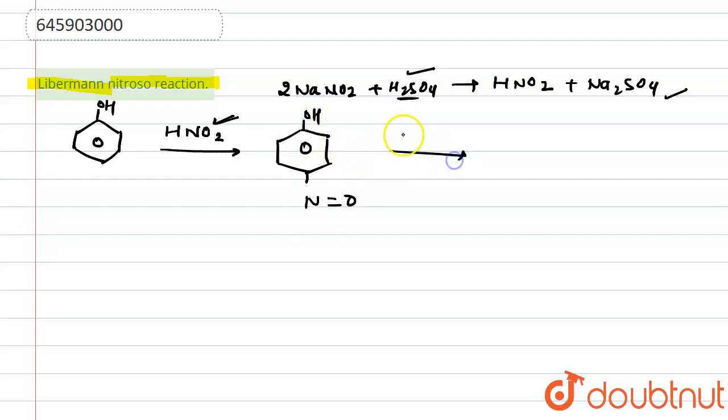After that, one more phenol will come in acidic medium. Here, one more phenol will come in acidic medium and it will react with this nitroso compound. So it will convert into something like this.